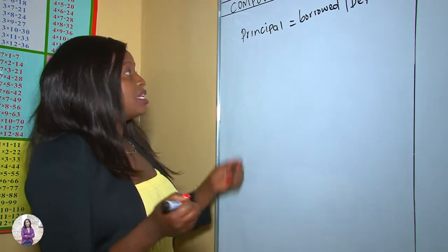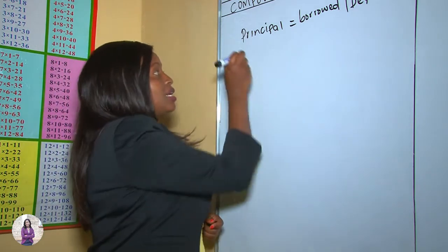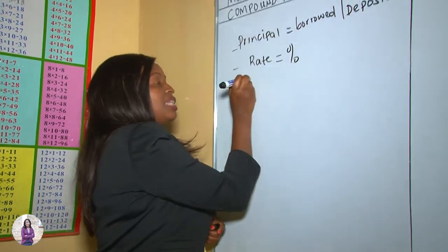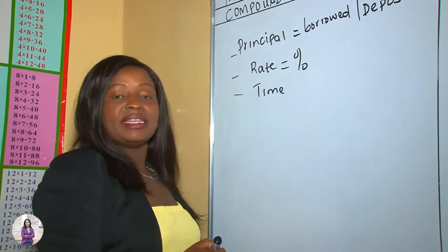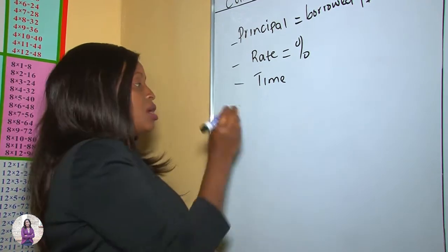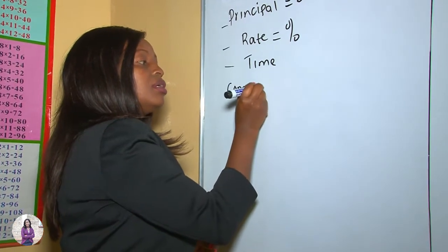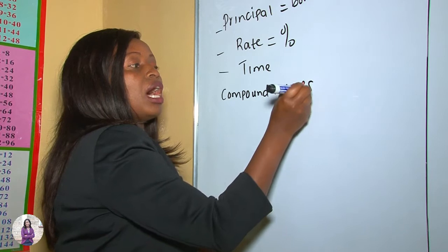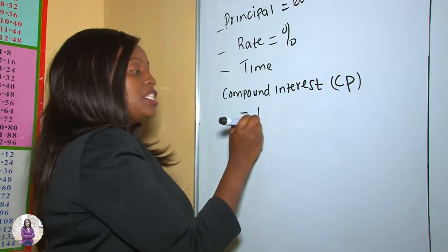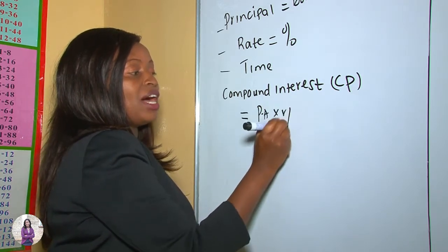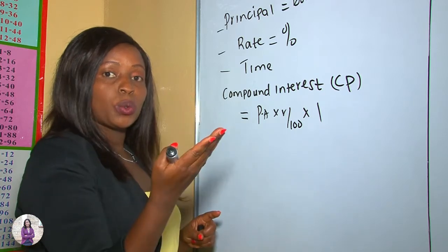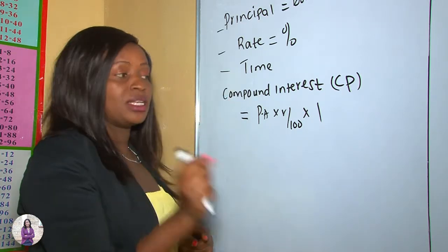The terms remain the same. There is principal, which is the money borrowed. Another term is rate, given as a percentage. Another term is time, and we talk about per annum — that is on a yearly basis. The compound interest (CI) equals principal amount times rate over 100, times 1. The time is always taken as one year; even if given two years, you work year by year.